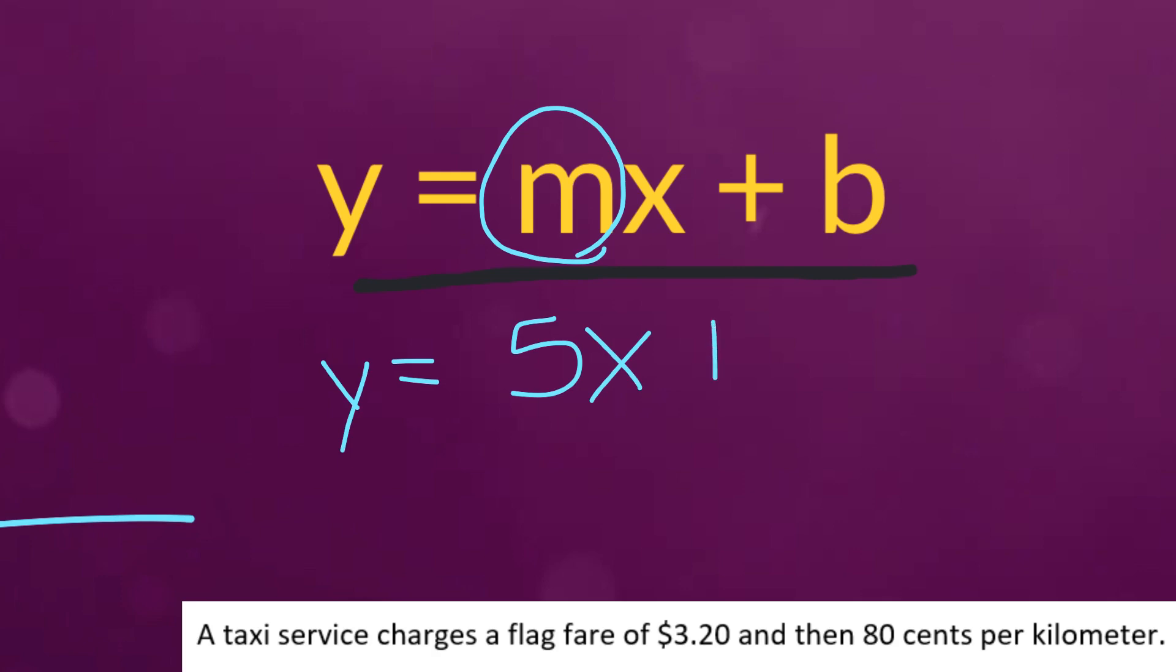So when we're given an equation like y equals, let's say, 5x plus 2, we know that because the coefficient is 5, that's also our slope. So our slope in that case for that equation would be 5.